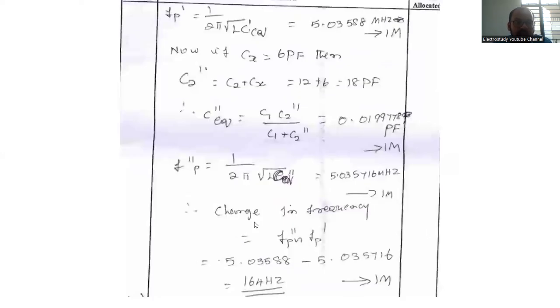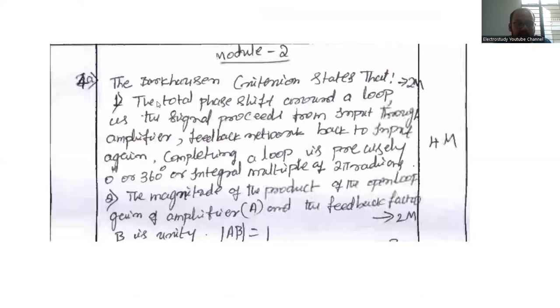Ultimately you will be getting FP dash then C equivalent dash FP double dash. The frequency will be ultimately 164 hertz. That is ultimate frequency. Follow this procedure, surely you can reach the answer.